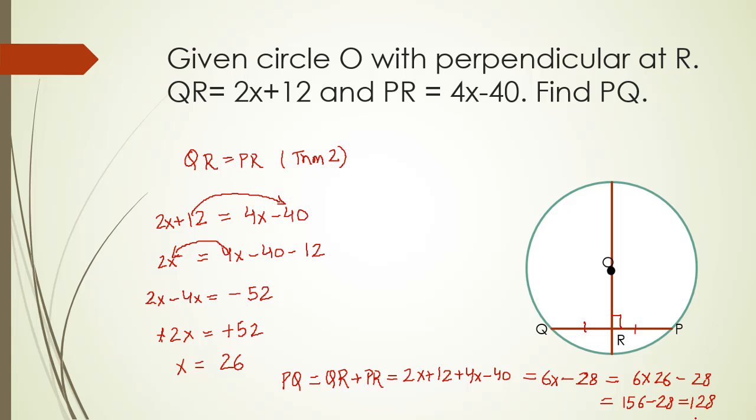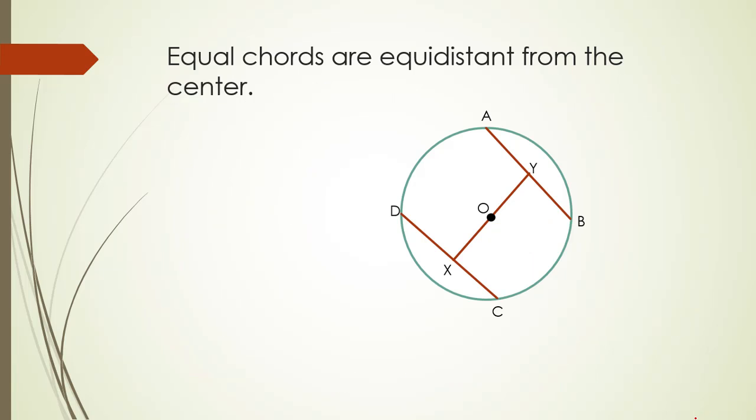Let's move on to another theorem for today. Equal chords are equidistant from the center. Again, this theorem is based on chords. Chords AB and CD are given to be two equal chords. Their distance from the center is given by OX and OY. If the two chords are equal, then their distance from the center is also equal. Let's solve a problem related to this theorem.